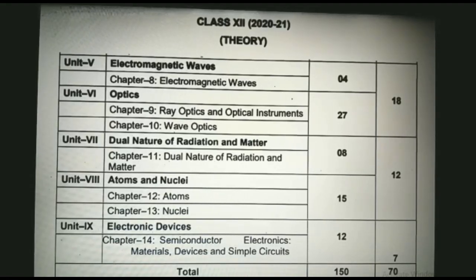Unit 5 consists of one chapter: Chapter 8 electromagnetic waves. Unit 6 consists of two chapters: Chapter 9 ray optics and optical instruments and Chapter 10 wave optics. The total mark distribution for unit 5 and 6 is 18.